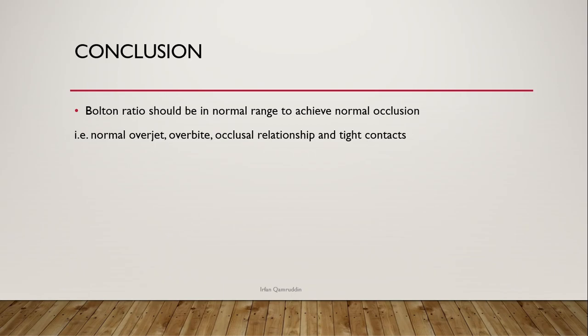In conclusion, the Bolton ratio should be within the normal range. To achieve normal occlusion — including normal overjet, normal overbite, Class I relationship, and tight contacts — your Bolton discrepancy must be in the normal range. Thank you.